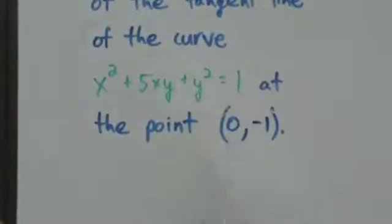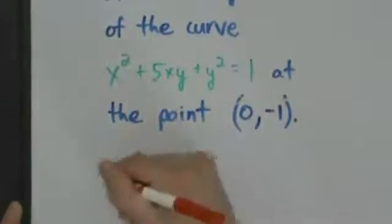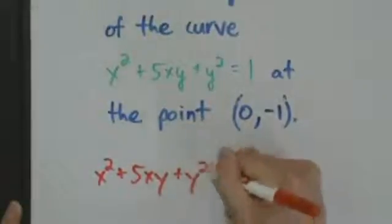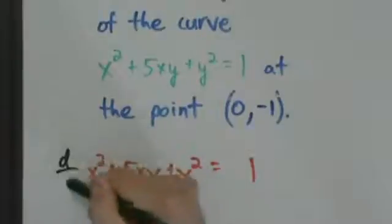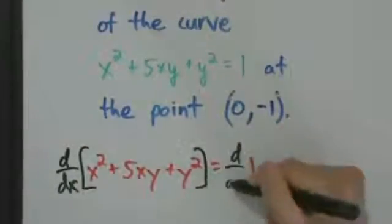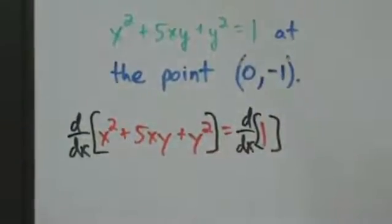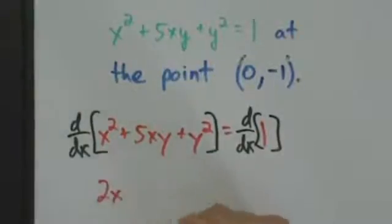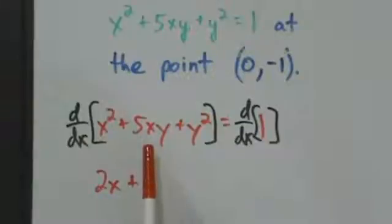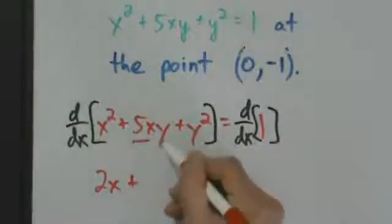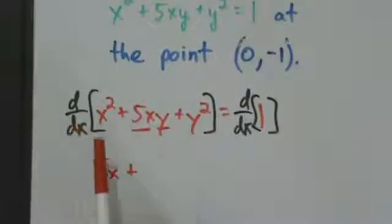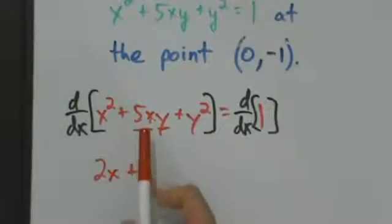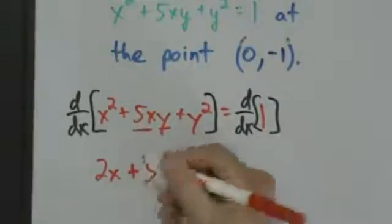We just need to find the value of the derivative dy/dx at this point. We start with the equation of the curve: x squared plus 5xy plus y squared equals 1. We take the derivative of both sides with respect to x. Taking it term by term, the derivative of x squared is 2x. For the 5xy term, we have a product rule situation — the first is 5x and the second is y. The derivative of the first, 5x, is 5, and we multiply that by the second, y.